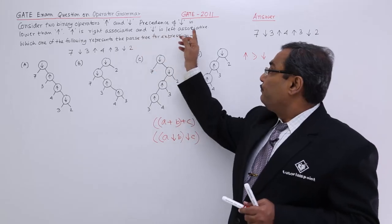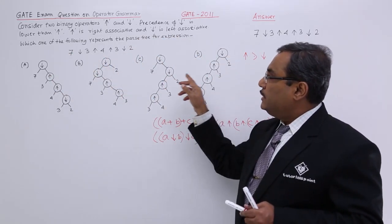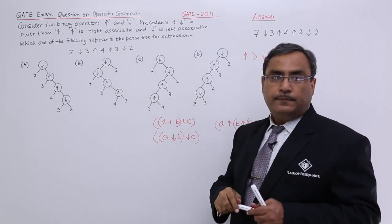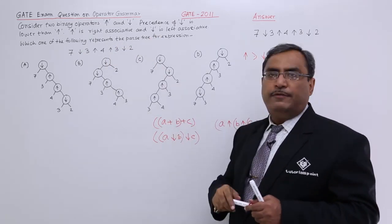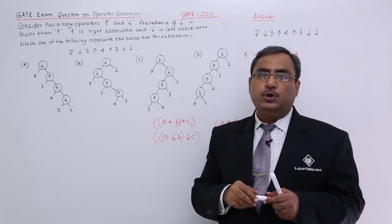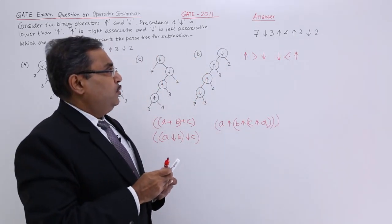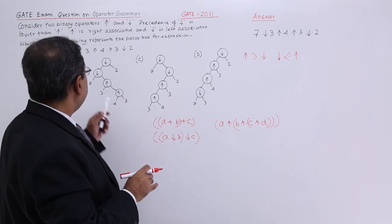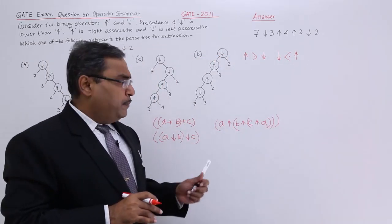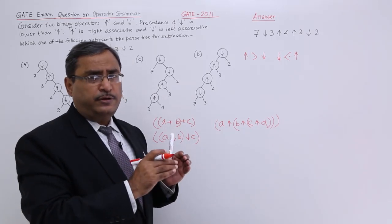Now, which one of the following trees represents the parse tree for the given expression? This expression has been given and we shall have to tell which parsed tree is suitable for it. The parsed tree will be suitable for it — first, we shall go over the same expression I have written here, and let me put brackets depending upon the associativity rule.